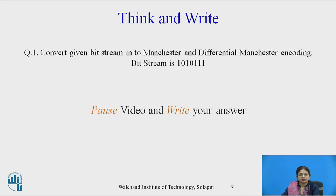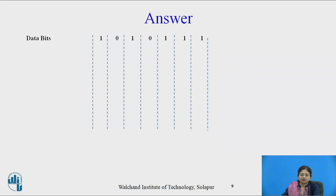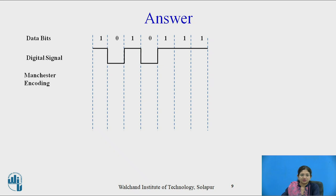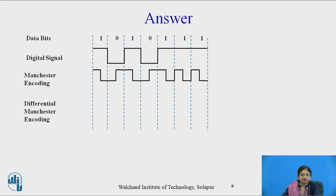Now pause the video, think about this question, and write down the answer. The question is: convert the given bit stream into Manchester and differential Manchester encoding. The bit stream is 1010111. Arrange the data and convert the bits into a digital signal. For Manchester: one is high-to-low, zero is low-to-high. For differential Manchester: one means no transition at the start of the interval, and zero means a transition at the start of the interval.